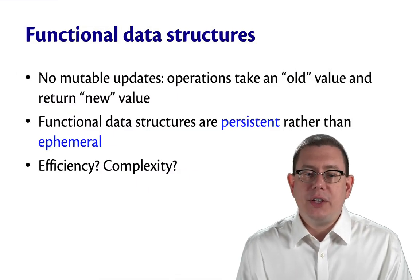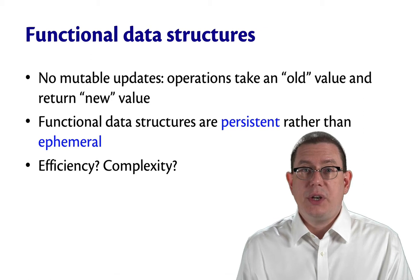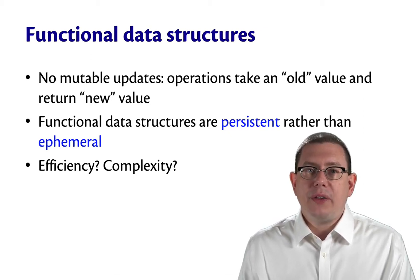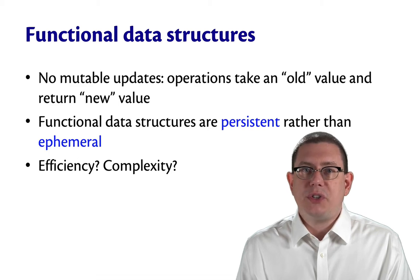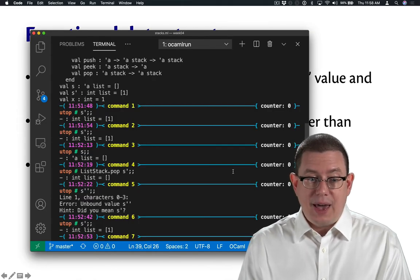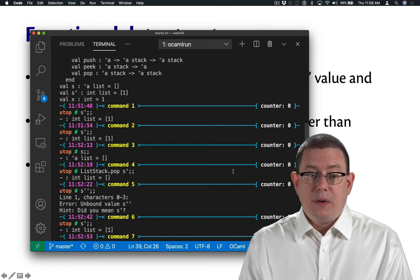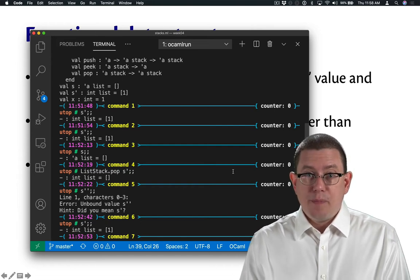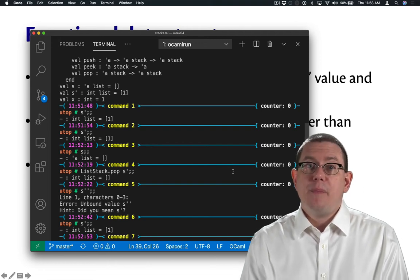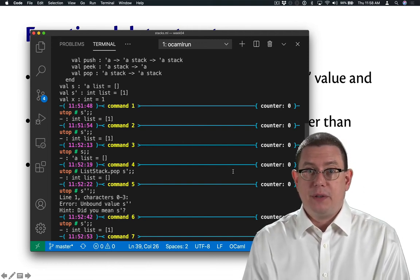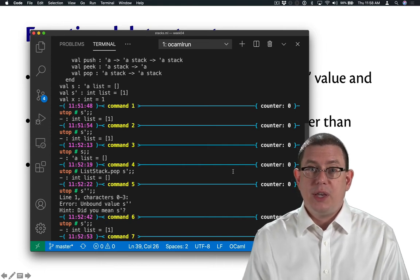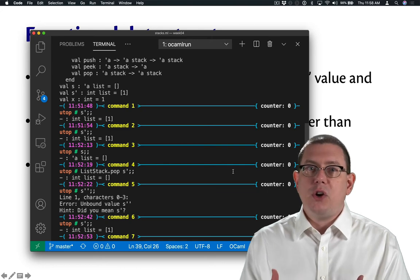We say that functional data structures are persistent rather than ephemeral. That means all the values of the data structure still persist throughout time. We saw that with our stacks S and S prime. S was unchanged by pushing one onto it, and S prime was unchanged by popping one from it. Those old values are still around and still available for use. They persist. They have not disappeared.